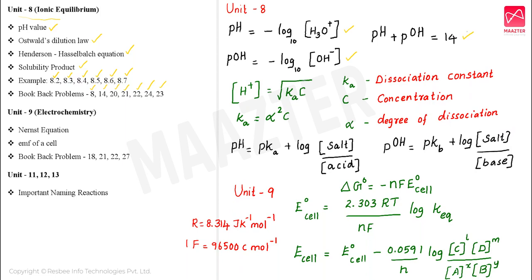Next, the Ostwald dilution law related formula: Kₐ equal to α² × C. Another formula: H⁺ concentration equal to root of Kₐ × C, where Kₐ is the dissociation constant, C is the concentration, and α is the degree of dissociation. Next, the Henderson-Hasselbalch equation: for acid buffer, pH equal to pKₐ plus log of concentration of salt divided by concentration of acid. POH equal to pKb plus log of salt concentration divided by base concentration.